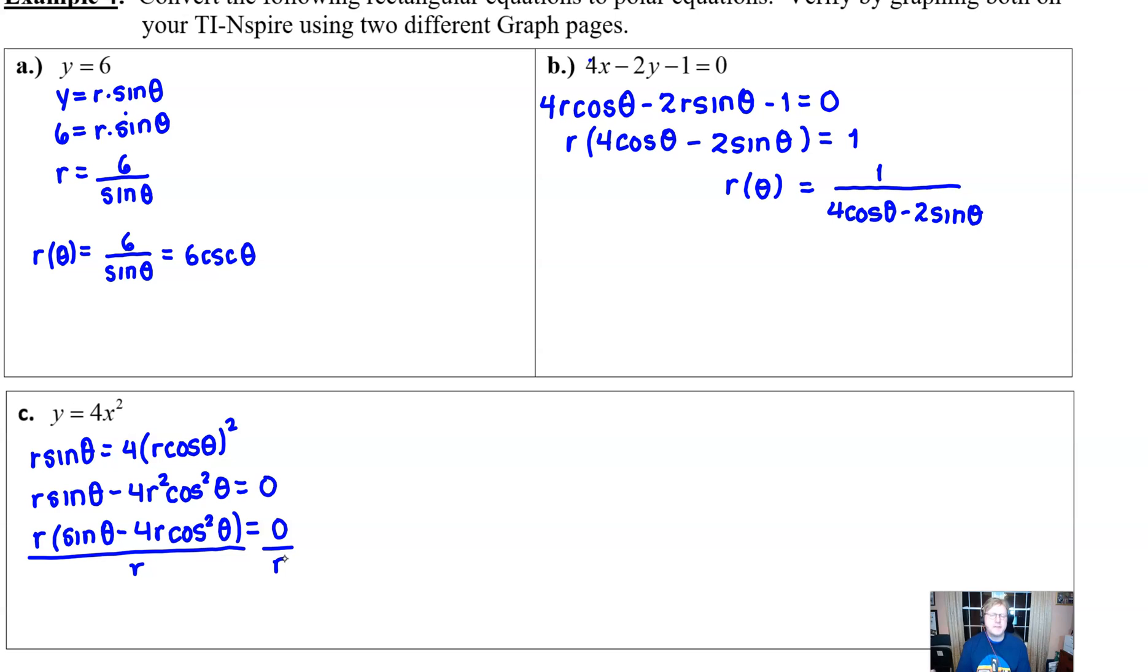And I don't think that r is going to be 0 in this problem because r equals 0 is not going to graph much of anything. In fact, that would just be a dot where the pole is on your coordinate plane. So you're going to see more than that, obviously, with y equal 4x squared. So we can go ahead and make that happen. And that just basically means that we have sine minus 4r cosine squared of theta equals 0.